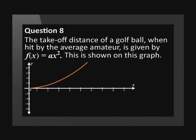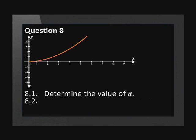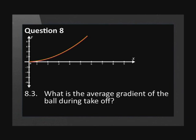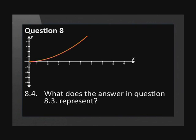The takeoff distance of a golf ball when hit by the average amateur is given by f of x equals ax squared. This is shown on this graph. Determine the value of a. What distance has the golf ball traveled after 3 seconds? What is the average gradient of the ball during takeoff? What does the answer in Question 8.3 represent?